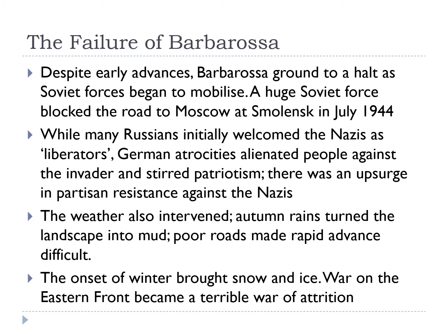The autumn rains turned the landscape into mud. The roads were poor as they normally are in Russia, but the Russians were used to this — the Germans were not — making rapid advance very difficult. Then winter brought snow and ice, and war on the Eastern Front became a terrible war of attrition where the two sides were almost at a stalemate, battling one another much like the trenches of World War One, except the devastation was being caused not just in trenches but in the actual cities, villages, and surrounding areas.